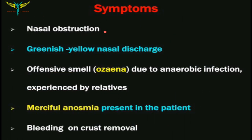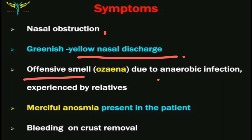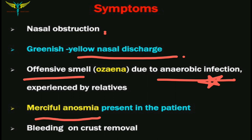The most common symptom is nasal obstruction, formed due to crust formation and stagnation of discharge. There is visible greenish-yellow nasal discharge which progressively forms crusts on drying. There is a severe offensive smell called ozena due to anaerobic infection, often noticed by surrounding people. Importantly, the patient experiences 'merciful anosmia' — the offensive smell makes the patient a social outcast, but the patient himself is unaware of the smell due to marked anosmia caused by degeneration of nerve fibers. Crust removal may reveal bleeding or epistaxis.